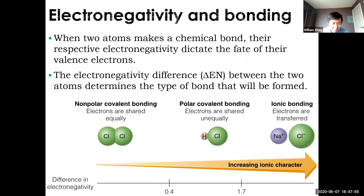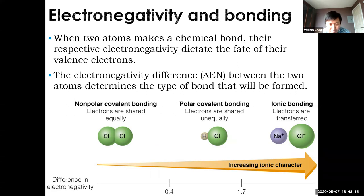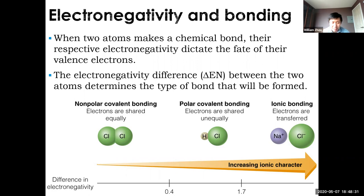Within covalent bonds, you have two types: polar and nonpolar. A nonpolar covalent bond means electrons are shared equally — everybody gets the same amount of electrons for the same amount of time. If the difference is between 0.4 and 1.7, you have unequal sharing: one atom has the electrons closer to them for longer, making it polar covalent — still sharing, but polar.